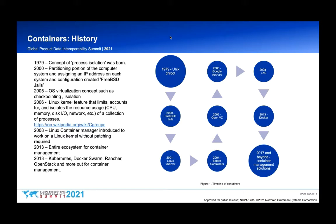In 2006, Google introduced the concept of cgroups, which introduced the isolation of resources — CPU, memory, disk I/O, and network — eventually folded into the Linux kernel. It was a game-changer in that you could impose limits on whatever process or app on a shared server. In 2008, LXC was introduced, bringing in cgroups and Linux namespacing, allowing multiple Linux systems to run on a single host environment.